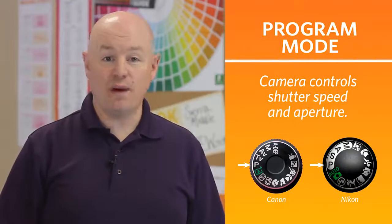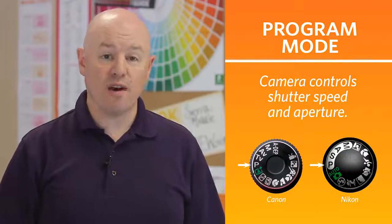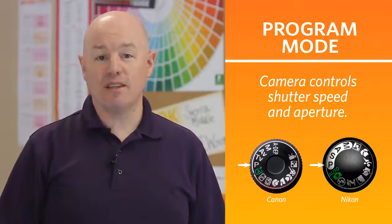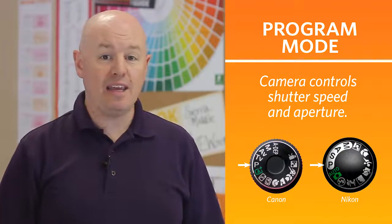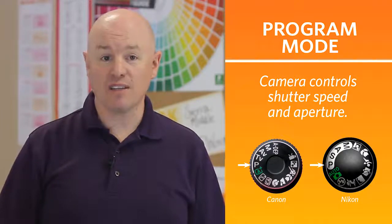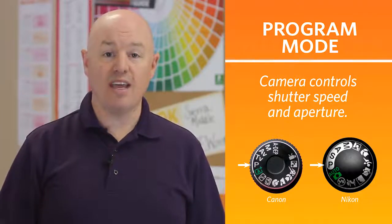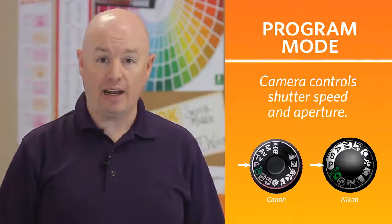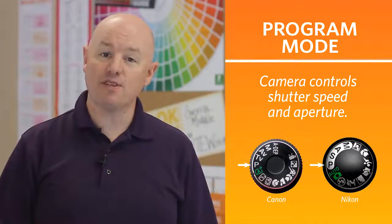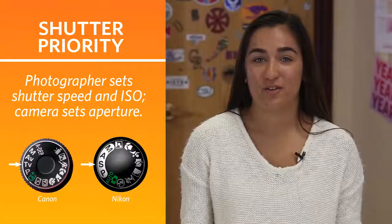The next mode that you might use is program mode. Program mode is labeled as a P on the dial of a Canon or a Nikon camera. When shooting in program mode, the photographer has control over the ISO setting, while the camera controls the aperture value and the shutter speed.